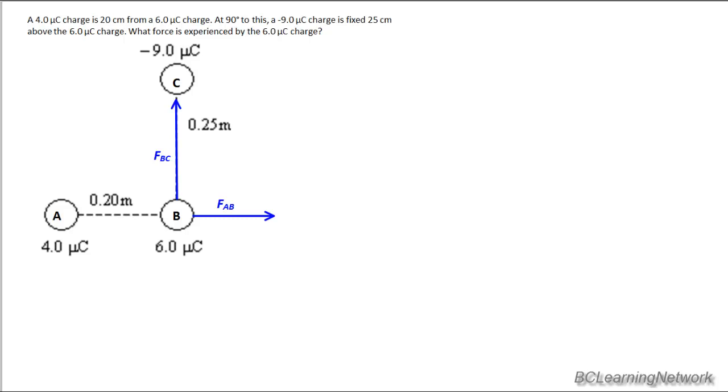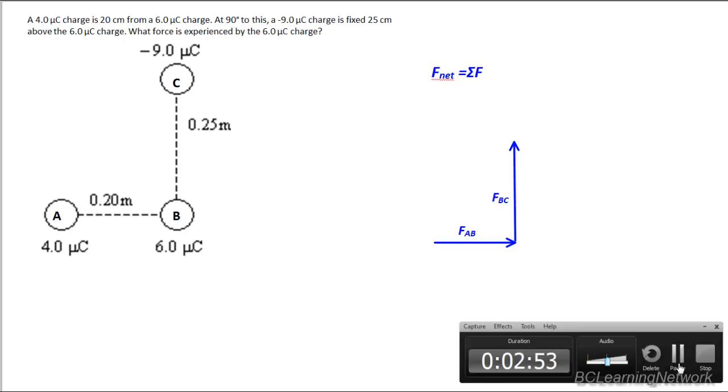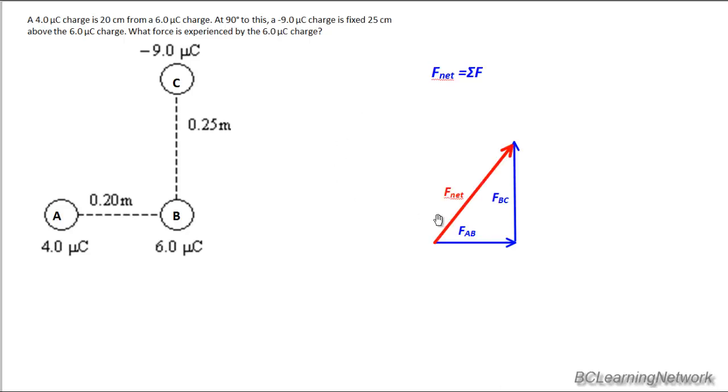So let's move them around and see what they look like tip to tail. Okay, so let's move FAB over. And to that we're going to add tip to tail FBC. Like that. So our overall net force will be from where we started this diagram and point towards where we finish it, as follows. So here we see our Fnet pointing from the lower left to the upper right.